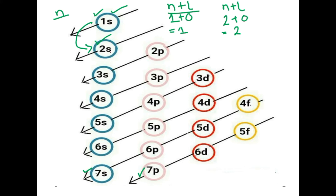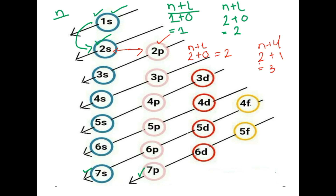Now if we want to calculate the energy difference between 2s and 2p: for 2s, n plus l gives 2 plus 0 equals 2. For 2p, n plus l gives 2 plus 1 equals 3. So the lower energy orbital is 2s, and 2p has higher energy compared to 2s. Therefore, electrons will be filled first in 2s.